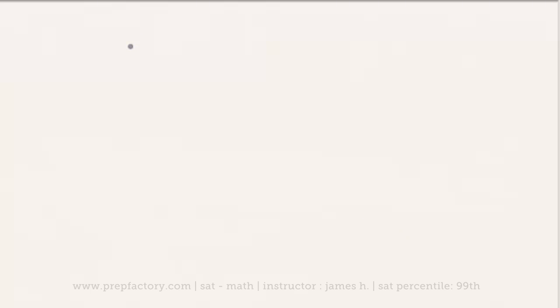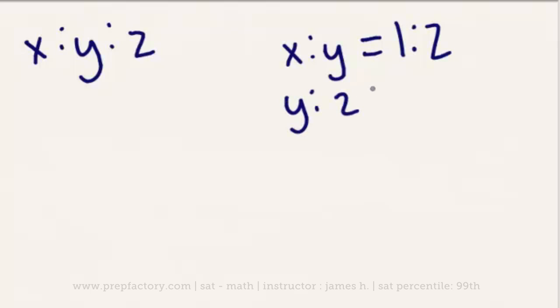Alright, so let's take a quick look at how we might go about combining ratios. So that's when you're finding a ratio between three things instead of two things from the ratio between two different things. So let's say we're trying to find the ratio of x to y to z, and we know that our ratio of x to y is 1 to 2. And that our ratio of y to z is 3 to 4.